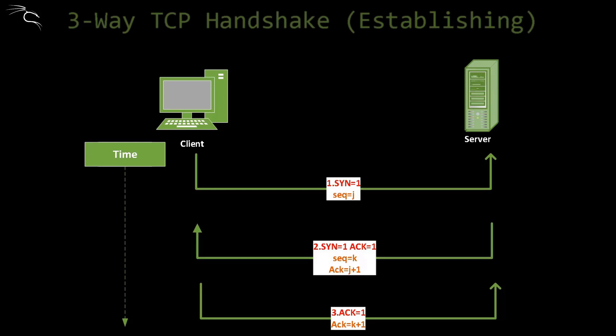It is called STEALTH because with early and primitive firewalls, this method — like opening only half a three-way handshake connection — often bypassed the logging of the firewall. However, this is no longer the case with new firewalls, as your scans will be detected.